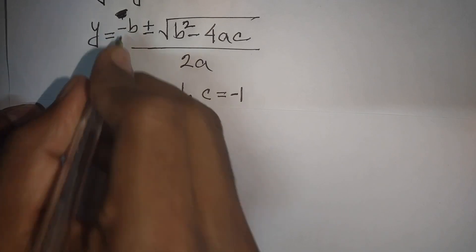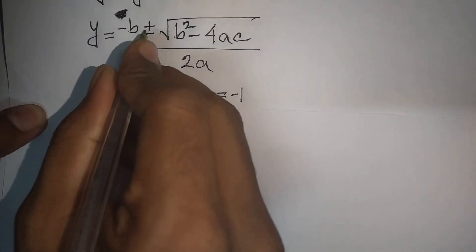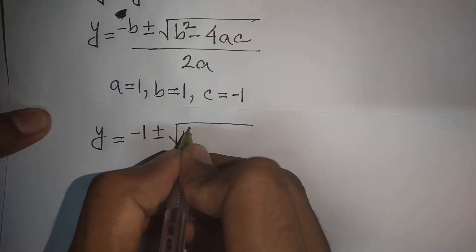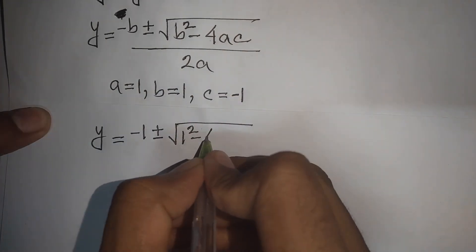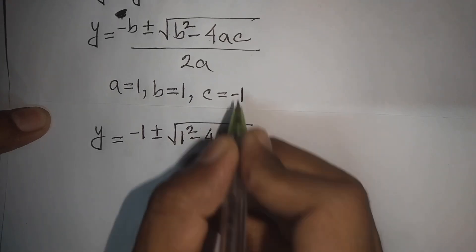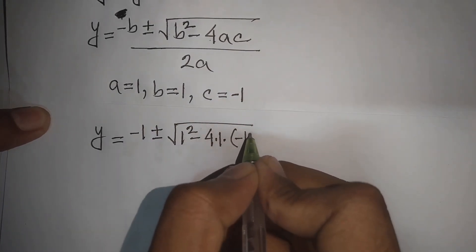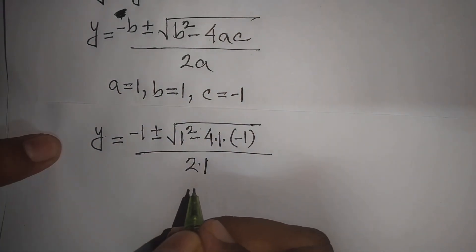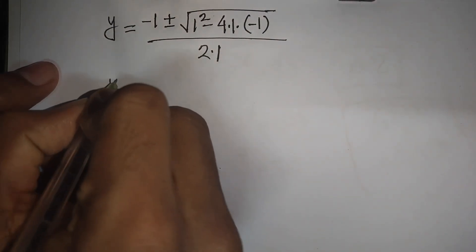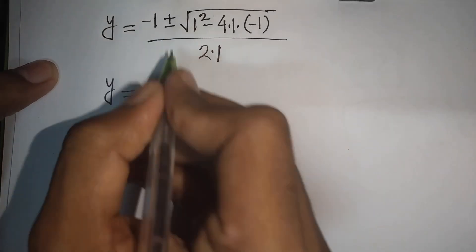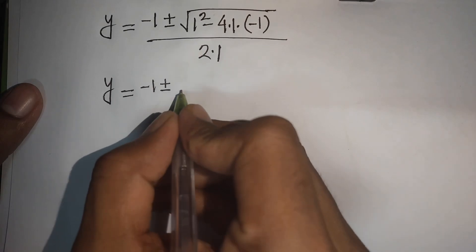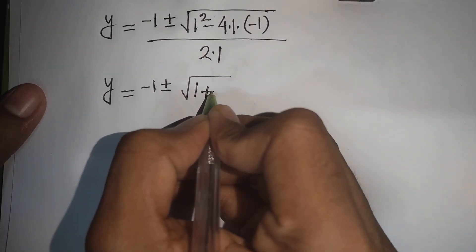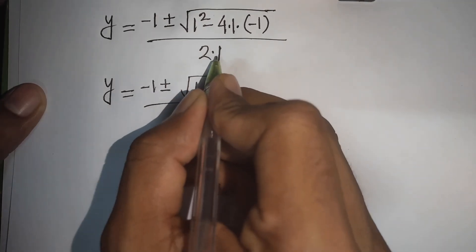So y equals minus 1, plus or minus square root of b squared — that is 1 — minus 4 times a (which is 1) times c (which is negative 1), so minus times minus gives plus 4, all divided by 2 times 1, which is 2.